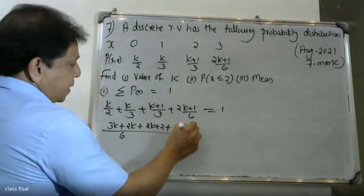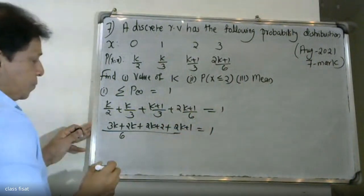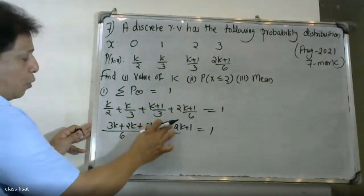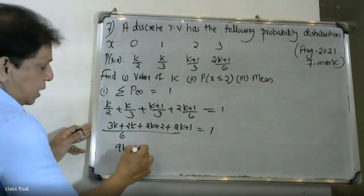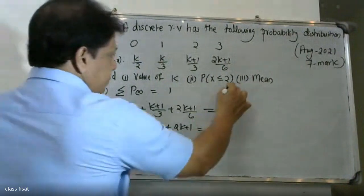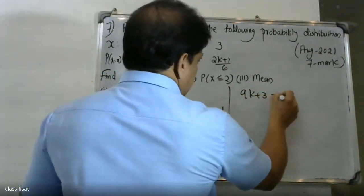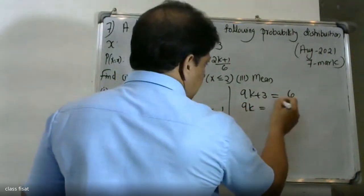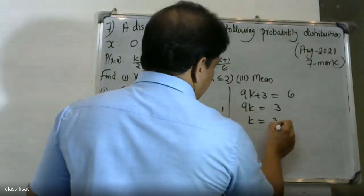Okay, plus one is equal to — entering the sum: k by six, that is 9k plus 3 is equal to 6, so 9k is equal to 6 minus 3, which is 3.